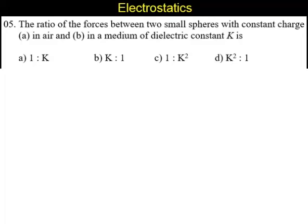Question number 5. The ratio of the force between two small spheres with a constant charge A in air and B in medium of dielectric constant K is.